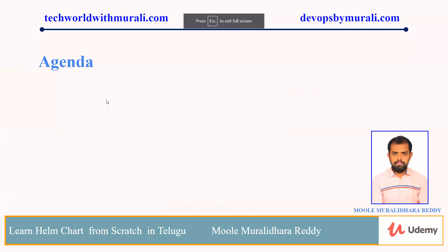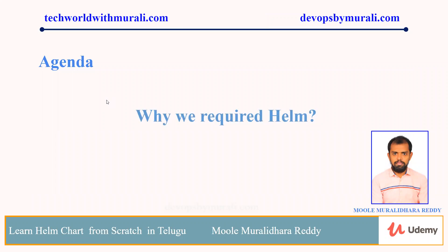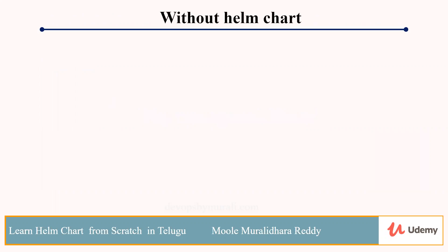Why do we require Helm? Helm is a great advantage. A Helm chart is essentially a collection of templates. Inside the template there are multiple Kubernetes objects, values, and everything. We can differentiate and reuse them. That's why we have the Helm chart.